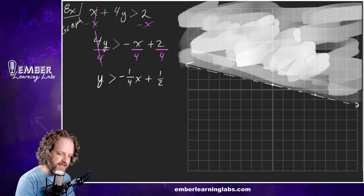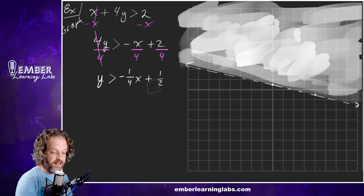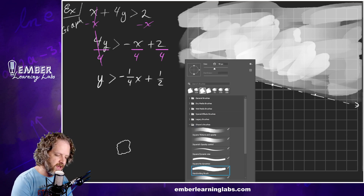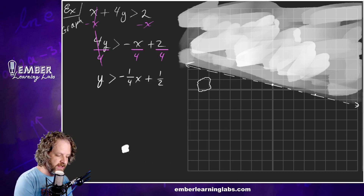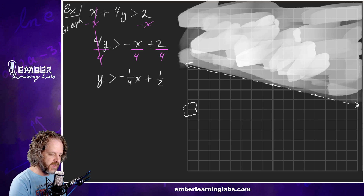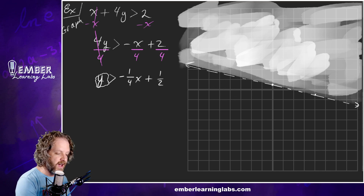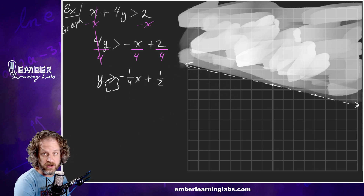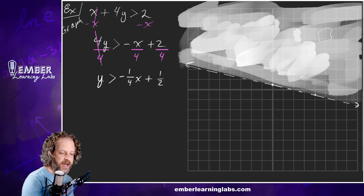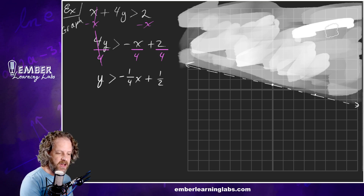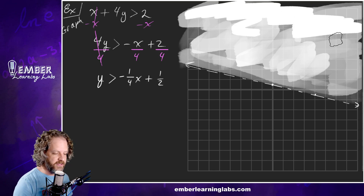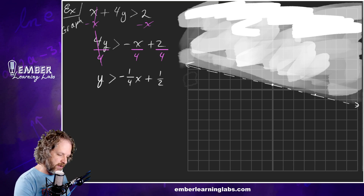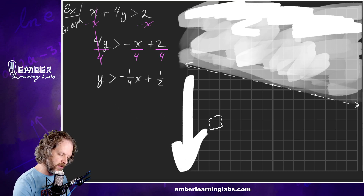So that's what this looks like: just this line like it was an equals, but it's dashed because it is not equal to — only greater than. And we shade above because it's greater than. If it was less than, we would be shading below.